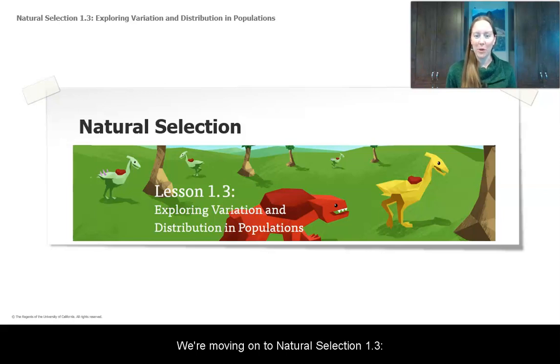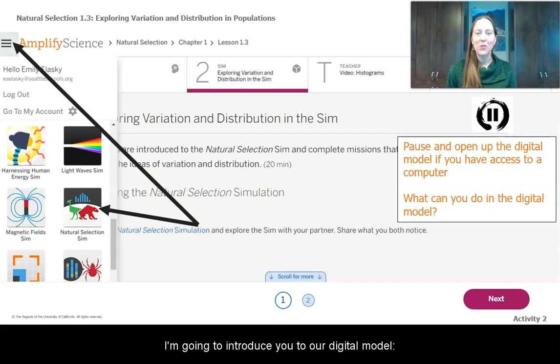We're moving on to natural selection 1.3, exploring variation and distribution in populations. I'm going to introduce you to our digital model, the natural selection simulation.